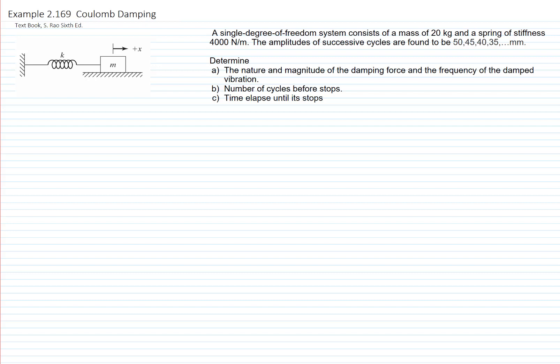We have an experimental font that indicates the amplitudes of consecutive cycles are found to be 50, 45, 40, 35 millimeters.